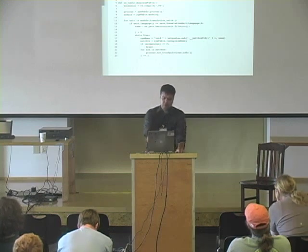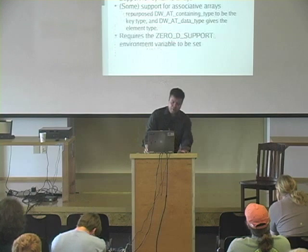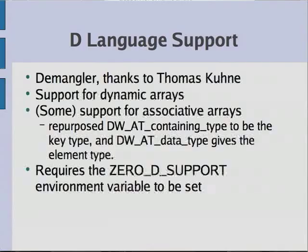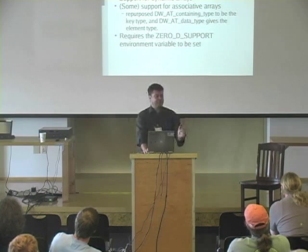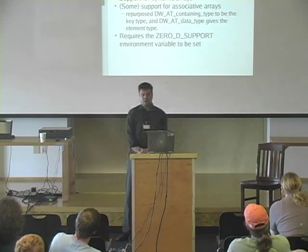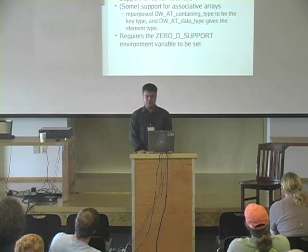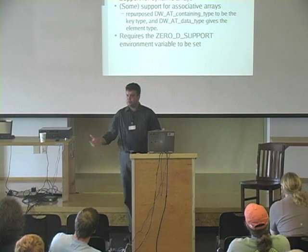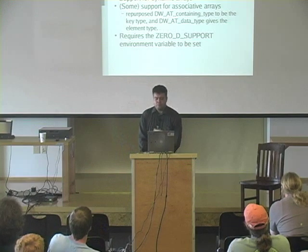To set a breakpoint, I have the unit test name with the complete return type, because the D demangler — generously contributed by Thomas — demangles names with their complete signature including return type and parameter types. Maybe we can get a flag that says just give me the name of the function. Integrating the D demangler took about 10 minutes because it has a very clean interface — just one function called 'demangle', you give it a char star. Good interfaces are extremely important.